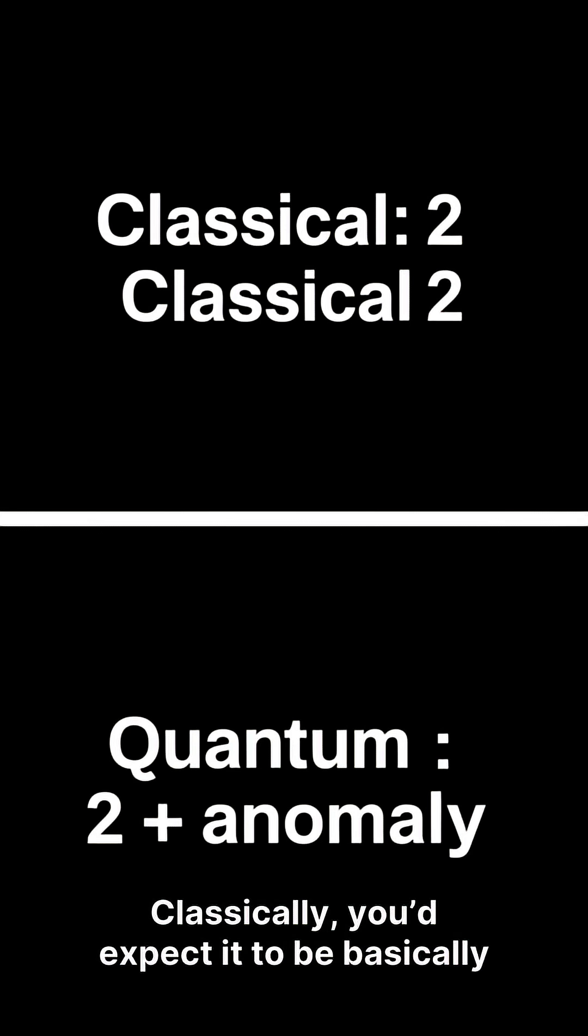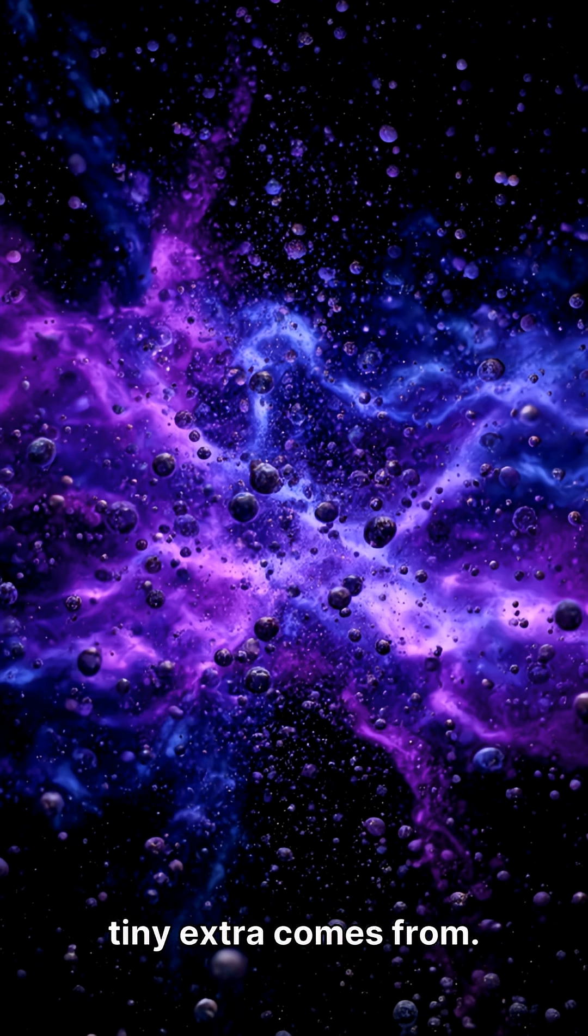Classically, you'd expect it to be basically two. But quantum physics adds a tiny extra piece called the anomaly. And the weird part is where that tiny extra comes from.